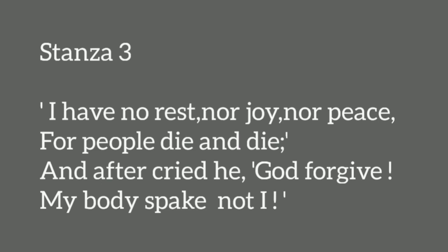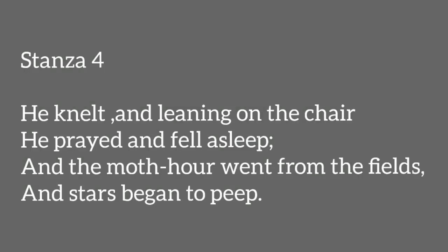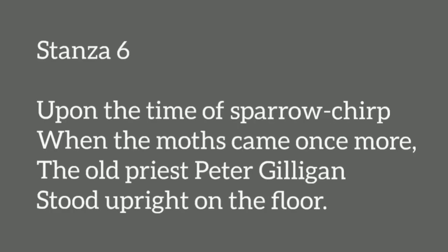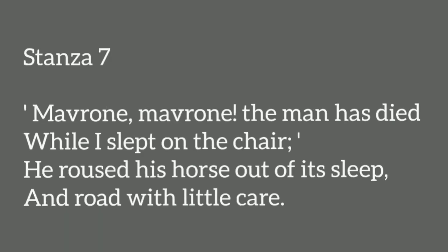The Ballad of Father Gilligan is written in the style of a ballad with twelve stanzas of four lines. It has been written in simple language. This poem showcases the story of an old priest — Father Gilligan. The setting of the poem is in the countryside, and it has been reflected in the fourth line of the first stanza: 'O Under Green Shard Slave.'